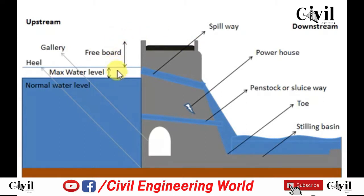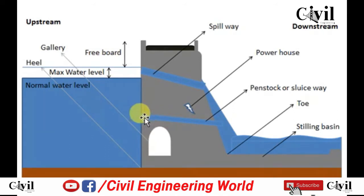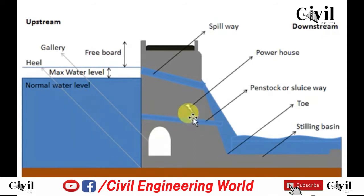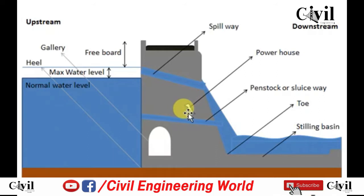Moving toward the downstream, it comes spillway. Spillway is the path through which water moves from upstream to downstream in case of rainy seasons or any flood. Next is powerhouse — in the powerhouse there are a number of turbines which are used to generate electricity.